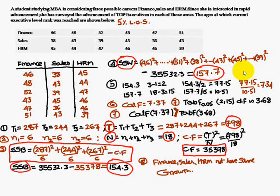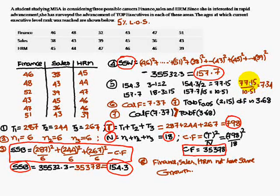This is about the one-way ANOVA. We use the F-test with the greatest value divided by the lowest value. Thank you.